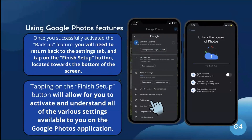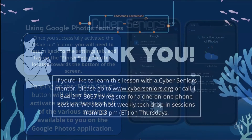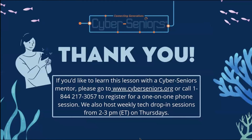Once you have activated the Backup feature, return to the settings tab and tap the Finish Setup button located towards the bottom of the screen. Tapping Finish Setup will allow you to activate and understand all the various settings available on the Google Photos application. Thank you very much for listening. If you would like to learn this with a Cyber Seniors mentor, call the number shown to register for a one-on-one phone session.